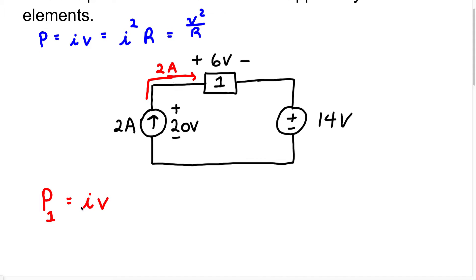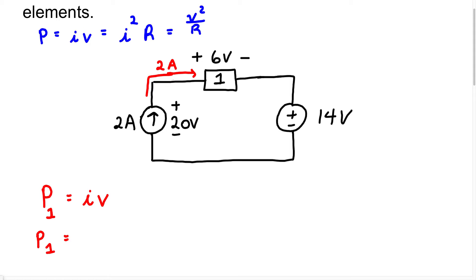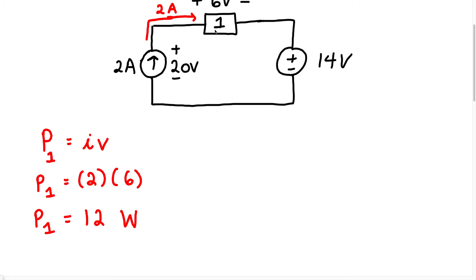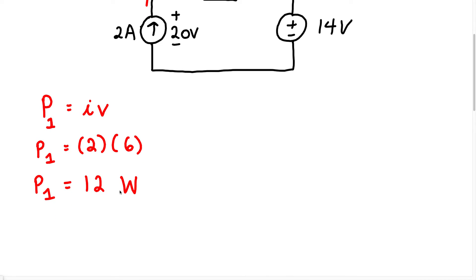Plugging into our equation, the current is 2 amps and the voltage across this element is 6 volts. Two times 6 gives us 12 watts. The unit for power is the watt (W). Because this is a positive power, we know this element is absorbing power. So the power in the first element is 12 watts — absorbing.